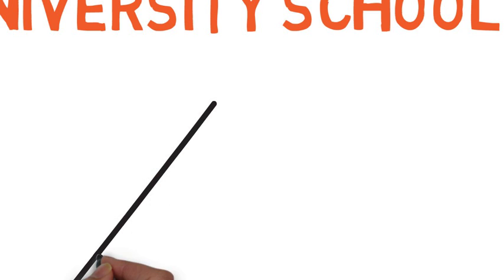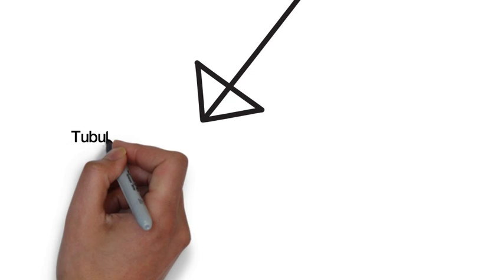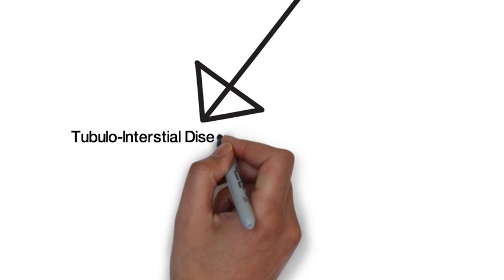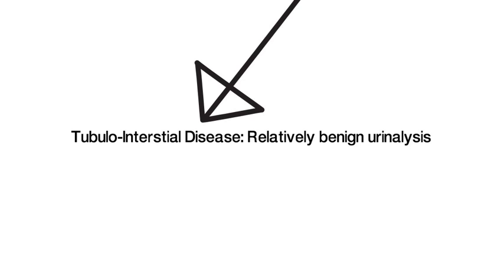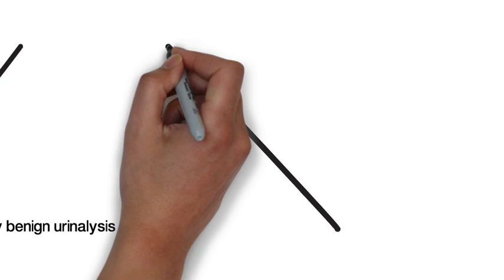I like to divide kidney disease between those that are tubular interstitial diseases and those who are recognized by the fact that urinalysis is relatively benign, though there are sometimes hematuria or just a small amount of proteinuria. And that really has to be distinguished from those diseases that are glomerular.